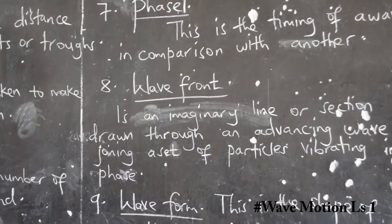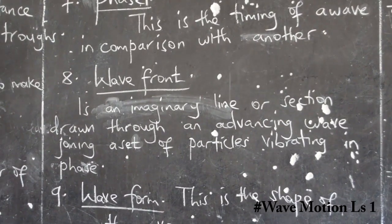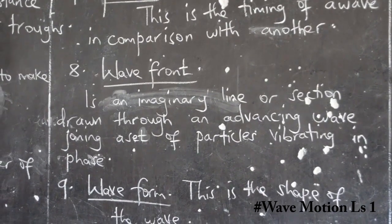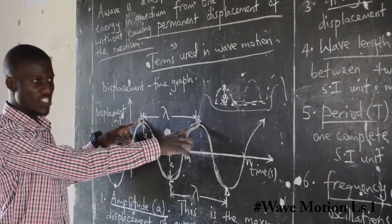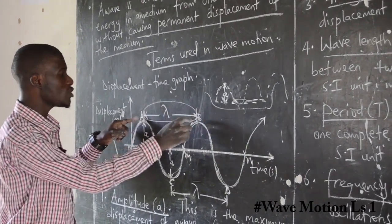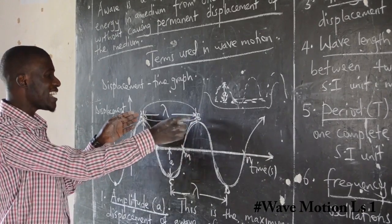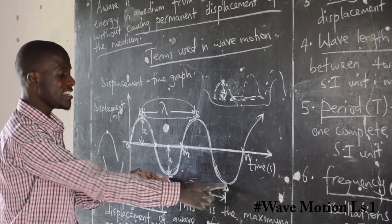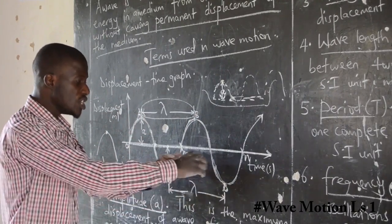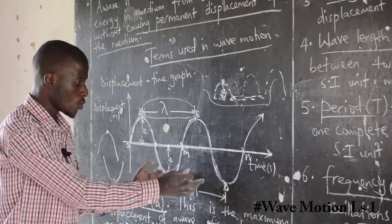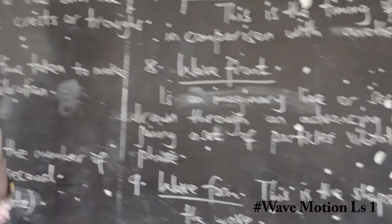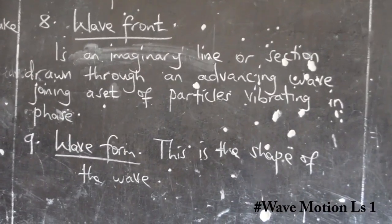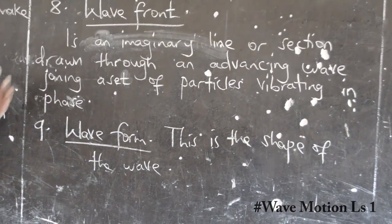Then we have wave front. A wave front is an imaginary line or section drawn through an advancing wave, joining a set of particles vibrating in phase. For example, if particles A and B are in phase, the imaginary section joining them is the wave front. Similarly, the section from C to D, which are in phase, is a wave front. Finally, wave form is the shape the wave takes — how the wave looks. Different waves take different shapes, and that shape is what we term the wave form.